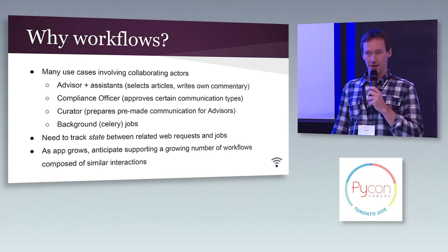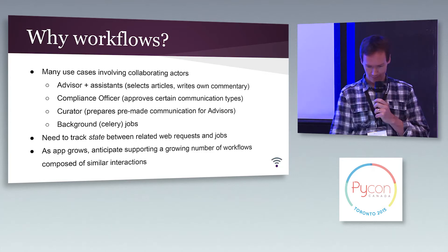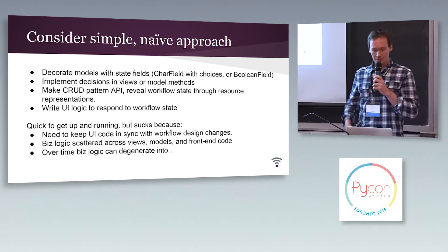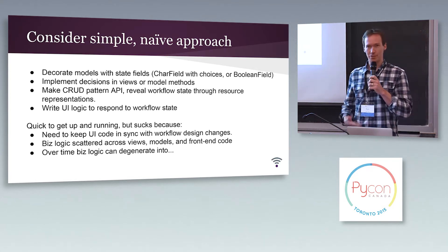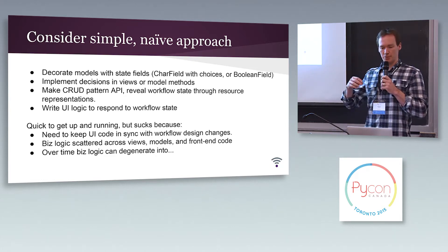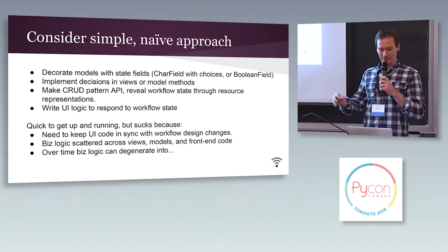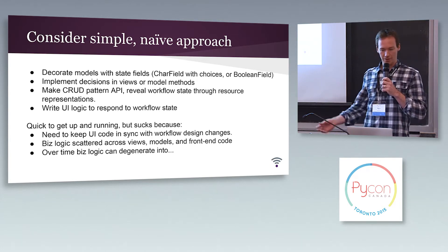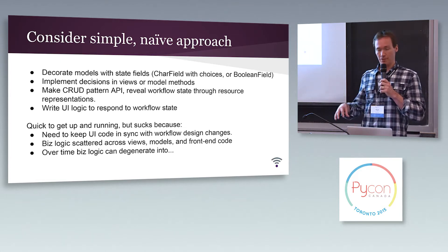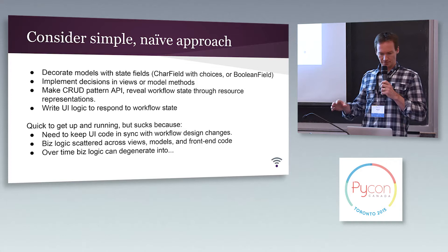So let's consider a naive approach. When you're faced with a workflow situation, maybe a basic first-cut naive approach would be: I'll just start to sprinkle in some state variables into my models along with their information content — some Booleans or some choice-based char fields. I'll write some decision logic in my views or in my models. I might expose some of these state variables through my API so that my front-end code can consume them and make decisions.